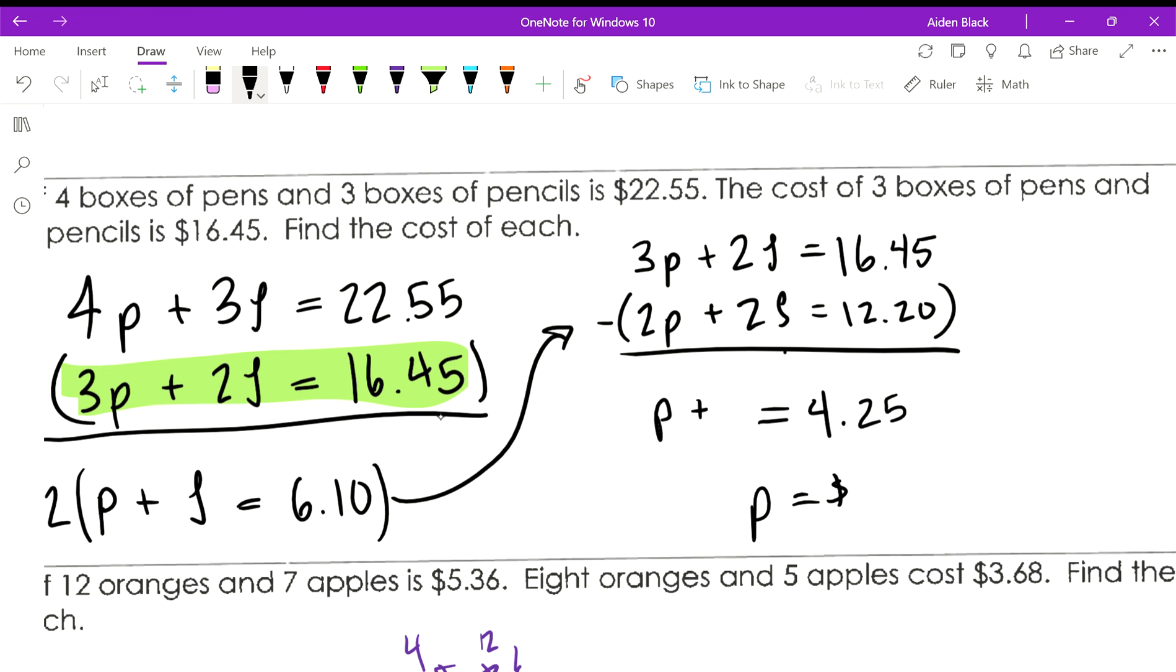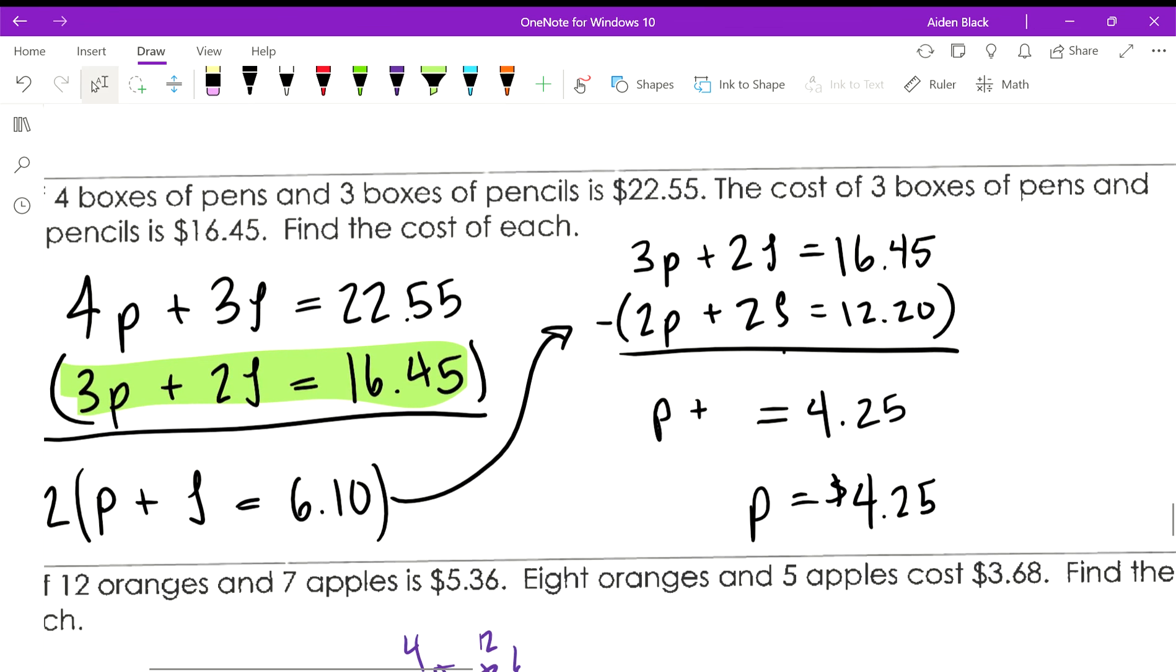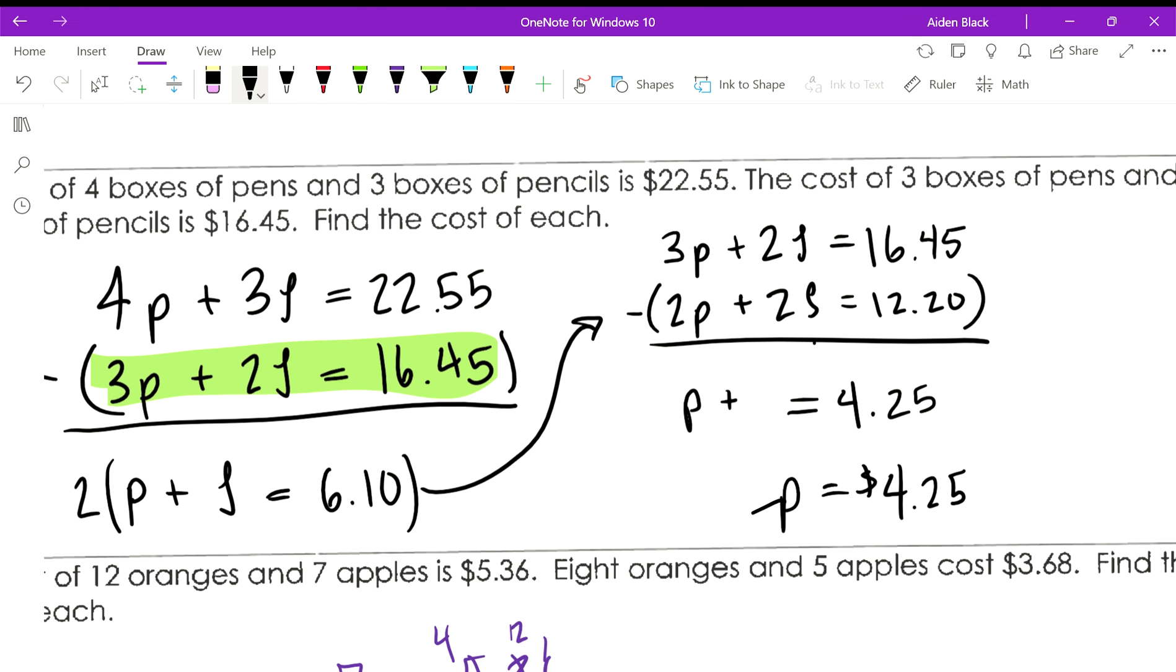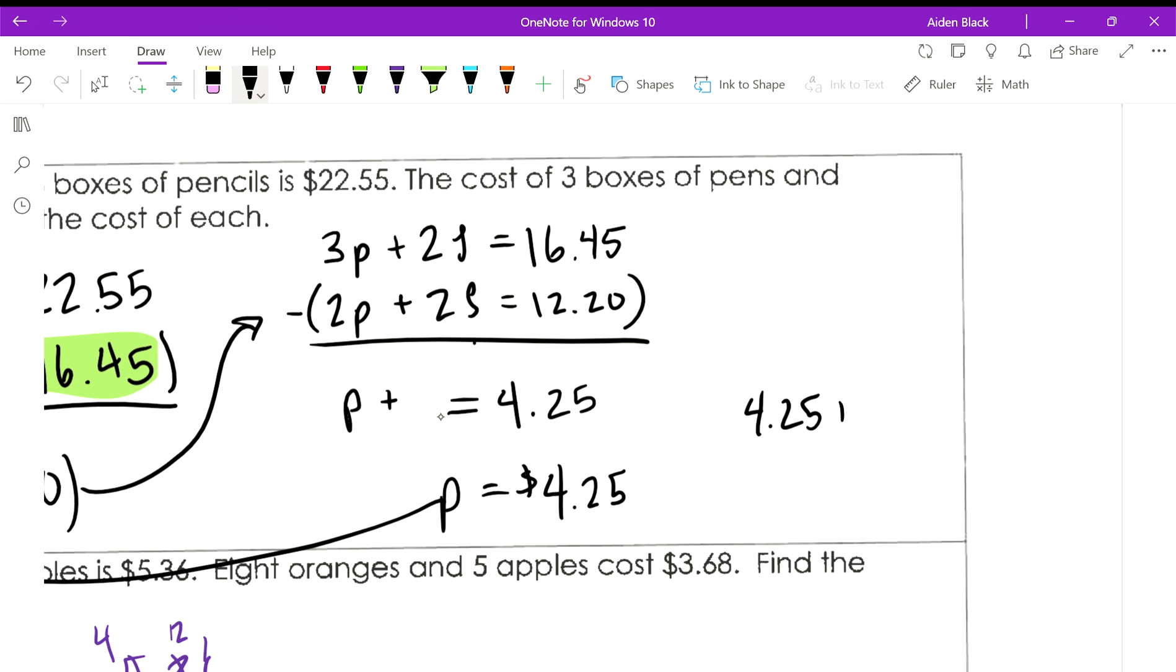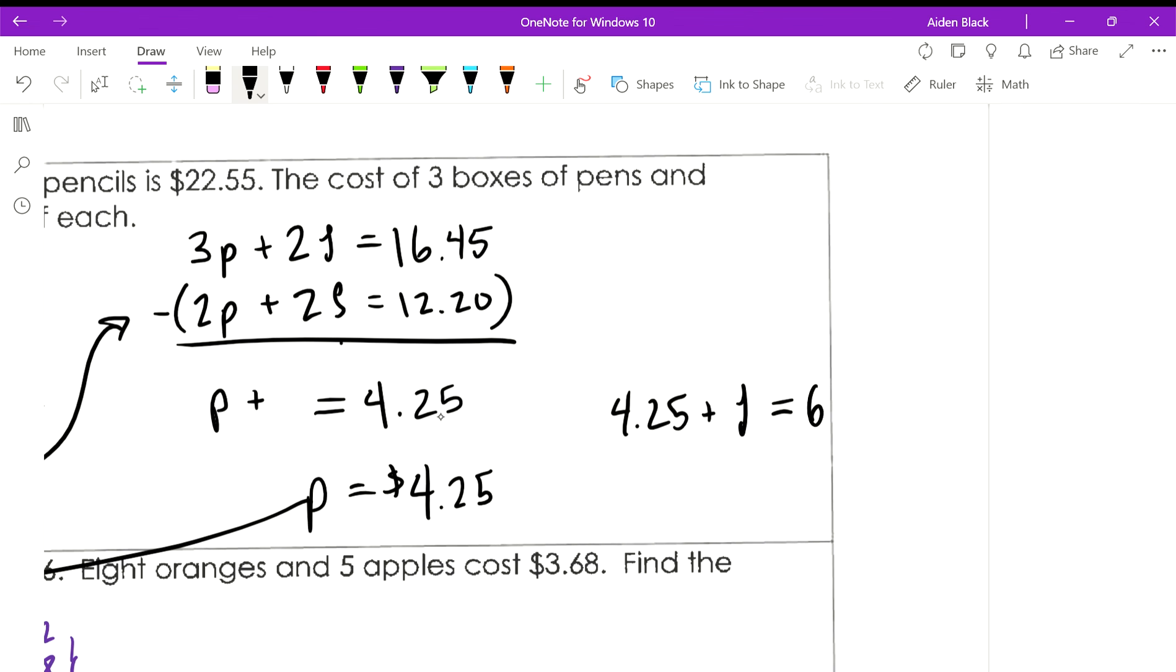And then you can plug this in to any of those equations. I think this first equation is the easiest one: $4.25 plus one box of pencils equals $6.10. Subtract $4.25 from both sides, and you will get that the pencils cost $1.85.